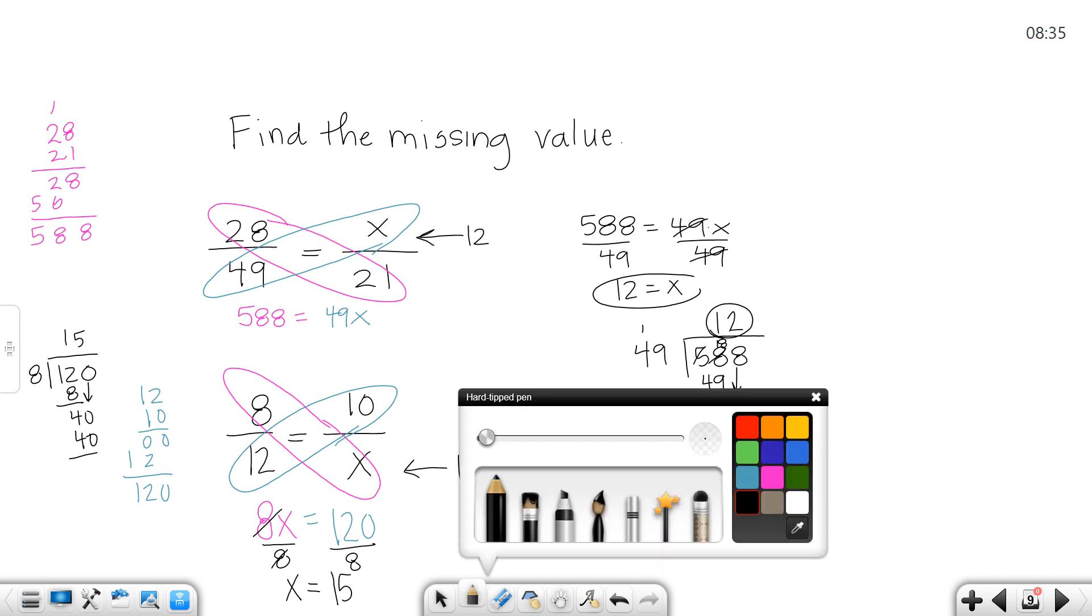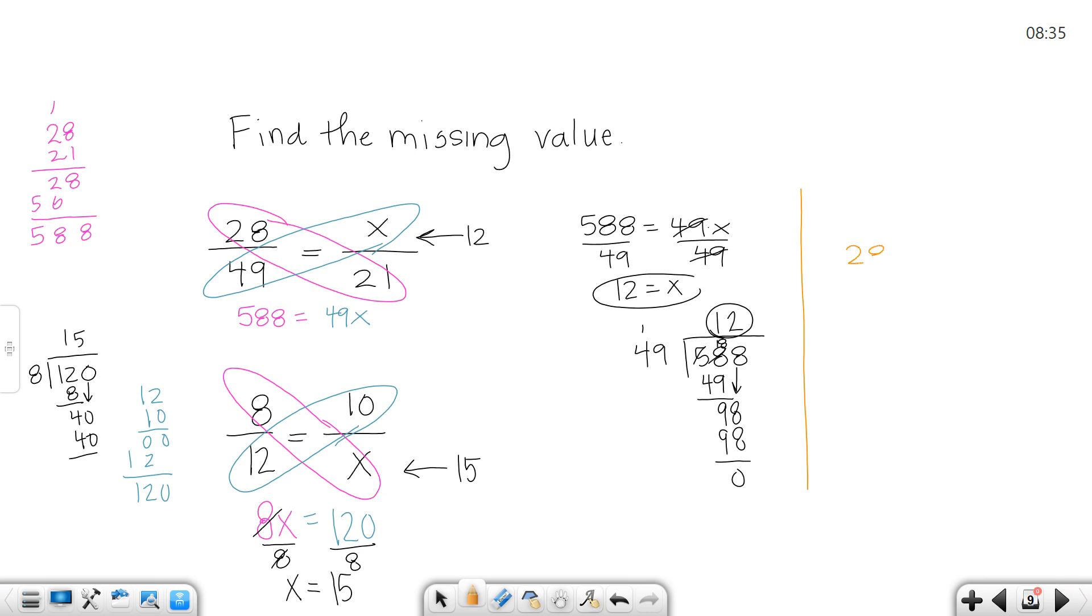Now there's another way that you could think about that one as well. If you didn't like that way, think about it this way. I see that 28 over 49 is going to reduce. It's going to reduce by 7. So 7 goes into 28 four times and 7 goes into 49 seven times. Now look at the other fraction. If you could think about what did I multiply 7 by to get 21, it would be times 3. So if I multiplied on the bottom times 3, I'd have to also multiply on the top by 3. So 4 times 3 would be 12. That's another way you could get this answer of 12.